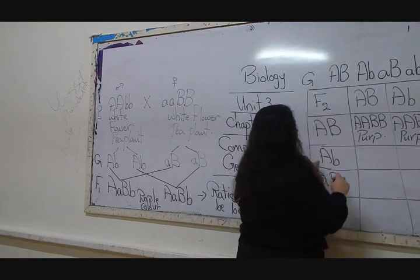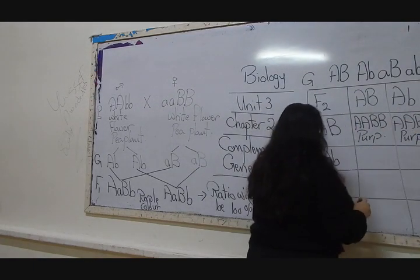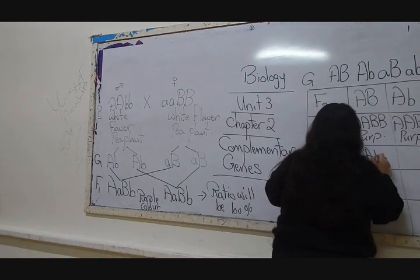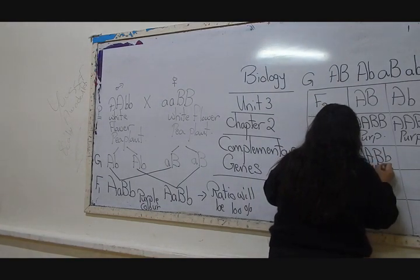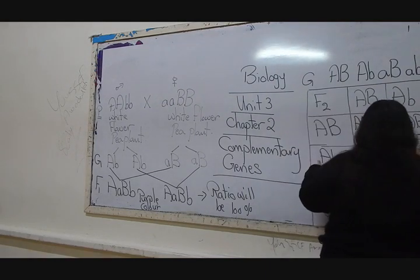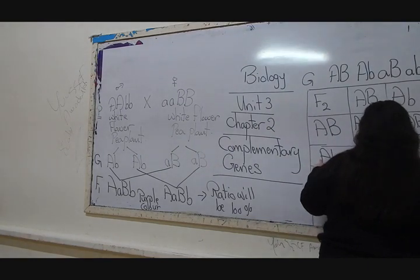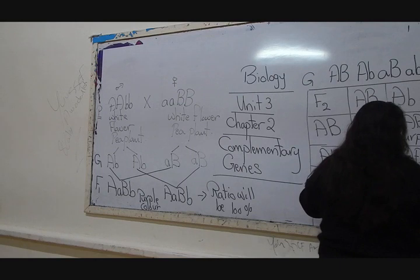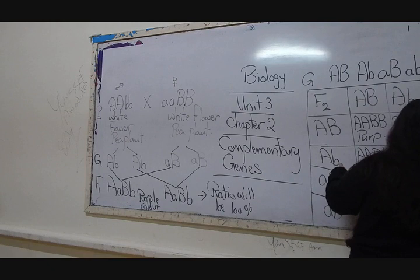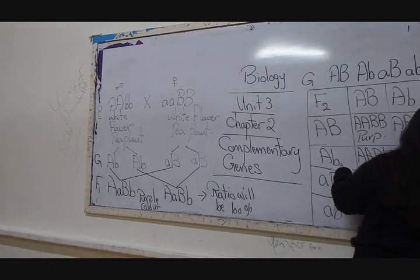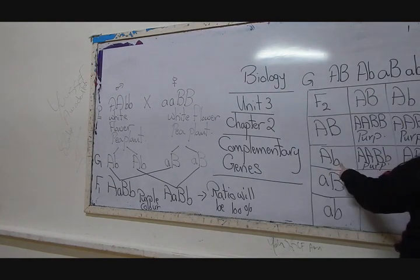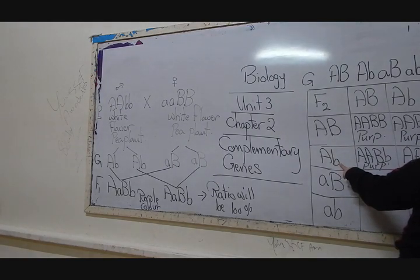Continuing: AaBb — purple; Aabb — white. Next row with aB gamete: AABb — purple; AaBb — purple; aaBB — white, because both alleles are from the same group only. We need at least one dominant gene from group A and one dominant gene from group B. So aaBb — also white.